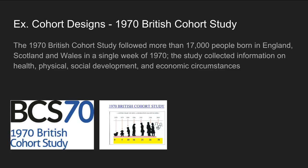One example of a cohort study is the 1970 British Cohort Study. It followed more than 17,000 people who were born in England, Scotland, and Wales. What makes it a cohort study is that this group of people were all born during a single week in 1970. The study collected information on their health, physical and social development, and economic circumstances at multiple points in time.